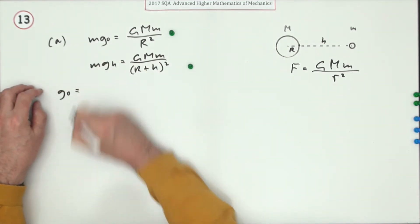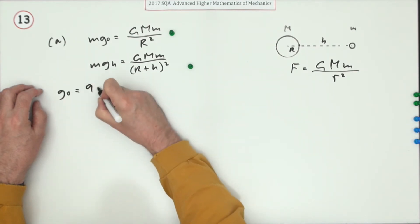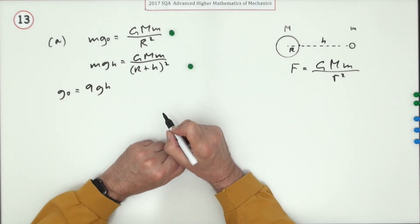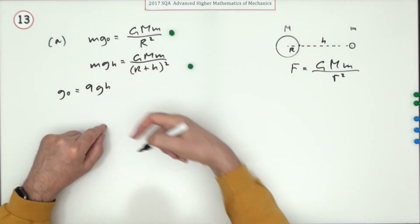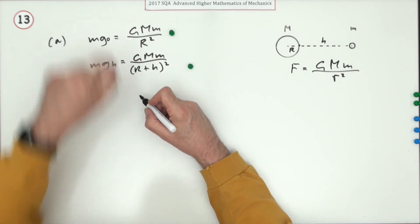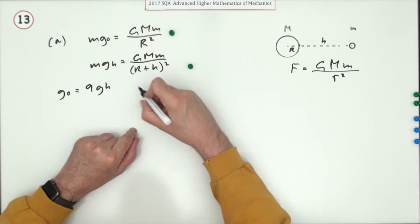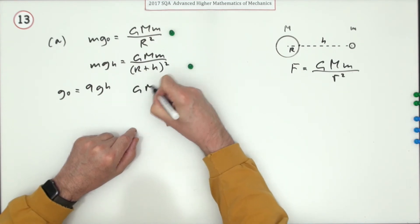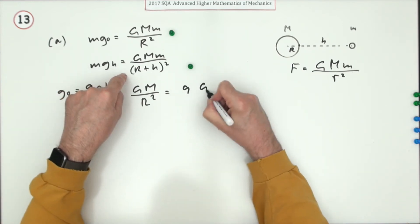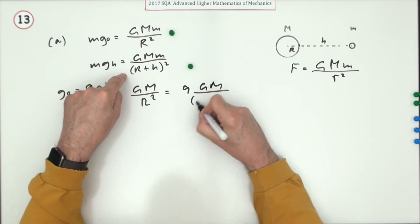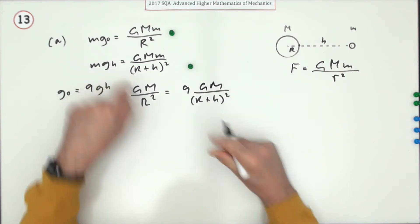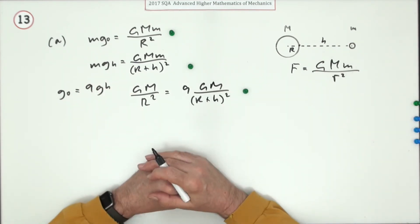Now what was the connection between them? Notice the m's at this point cancel out. Now you were told that g_0 was equal to nine times the acceleration at the height of the satellite. So replacing that would be this expression for g_0. Knocking out the m's says GM over r squared will be nine times this one, nine times GM over (r+h) squared.